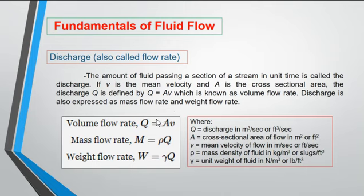This is known as the volume flow rate. This discharge is also expressed as mass flow rate and weight flow rate. For the mass flow rate, it is equal to the product of the density of the fluid and the volume flow rate. While for the weight flow rate, it is the product of the specific weight of the fluid and the volume flow rate.